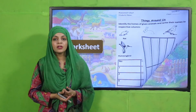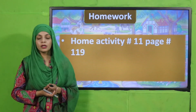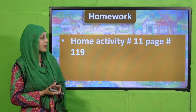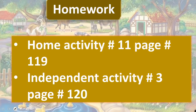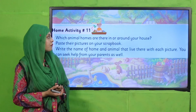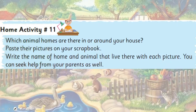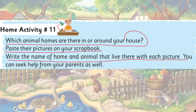Now let's move to the homework. You will do home activity number 11 on page 119 and independent activity number 3 on page 120. For home activity 11: which animal homes are in or around your house? Paste their pictures in your scrapbook, write the name of the home and the animal that lives there. You can seek help from your parents.